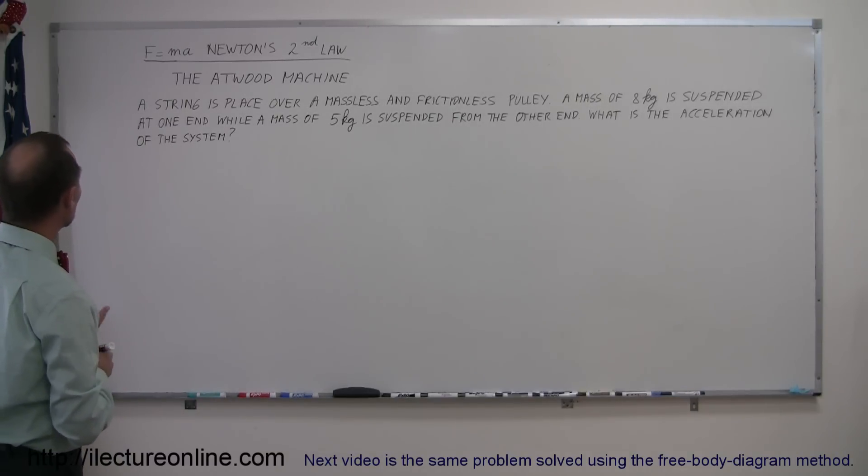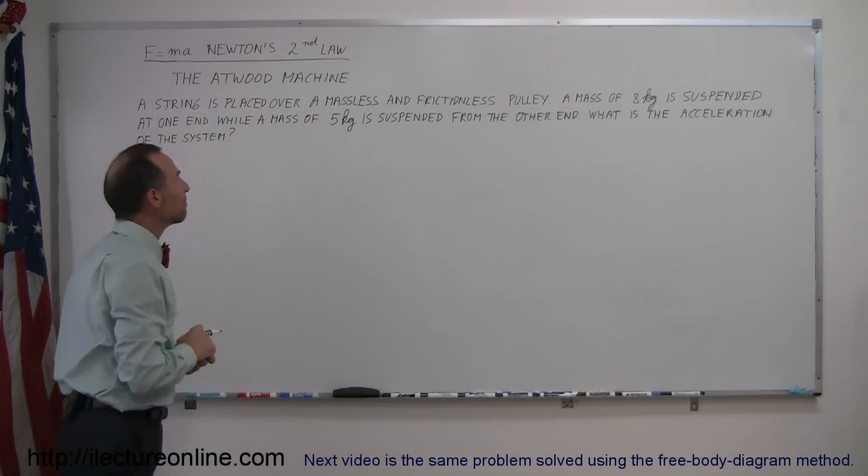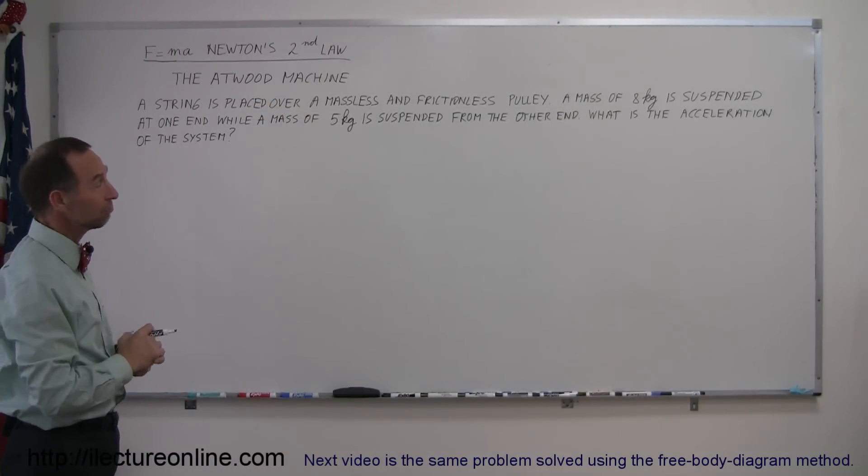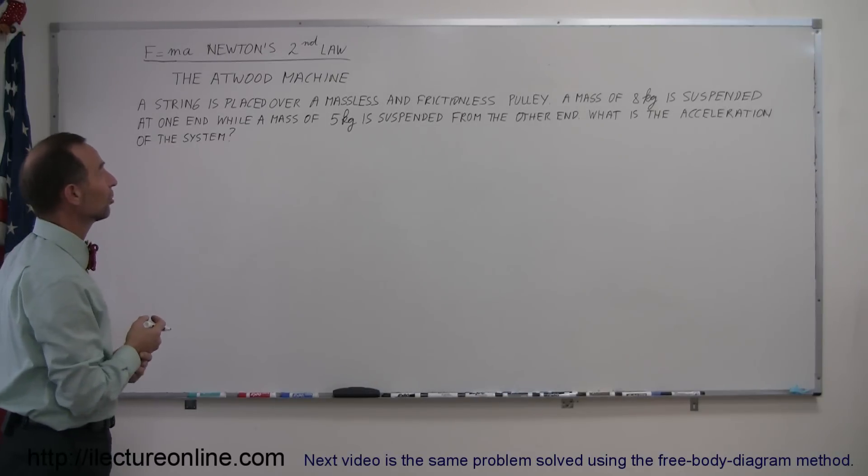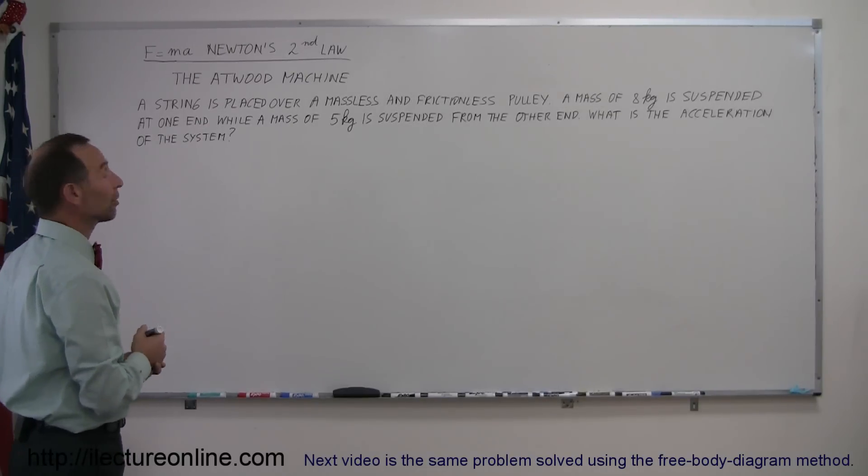It says here that a string is placed over a massless and frictionless pulley, also known as an Atwood machine. A mass of 8 kilograms is suspended at one end while a mass of 5 kilograms is suspended from the other end. What is the acceleration of the system?